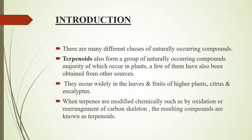There are many different classes of naturally occurring compounds. Terpenoids also form a group of naturally occurring compounds, the majority of which occur in plants. A few of them have also been obtained from other sources. They occur widely in the leaves and fruits of higher plants, citrus and eucalyptus. Terpenes are hydrocarbons and components of resin, and also turpentine produced from resin.